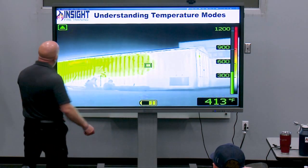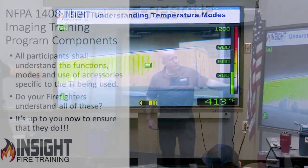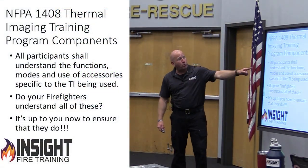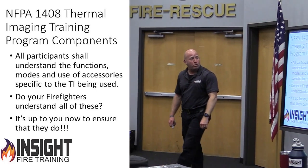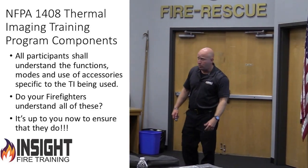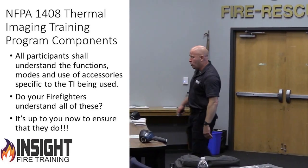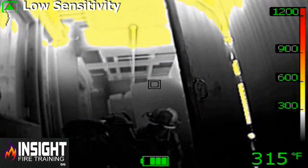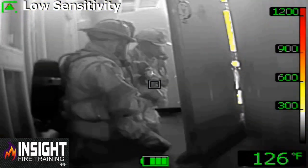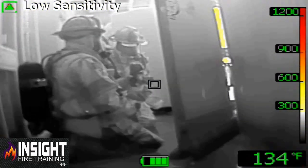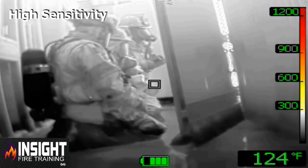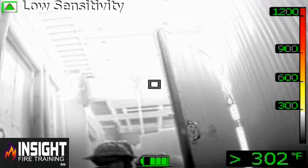There's your triangle. You won't see color until low sensitivity. NFPA 1408 says all participants shall understand the functions, modes, and use of accessories specific to the camera being used. Let's see this in action. We look down at the floor where my firefighters are in Nashville Fire Academy. My triangle will go away because I'm in high sensitivity because I don't see the heat. When I raise it back up and point at the heat, what happens?